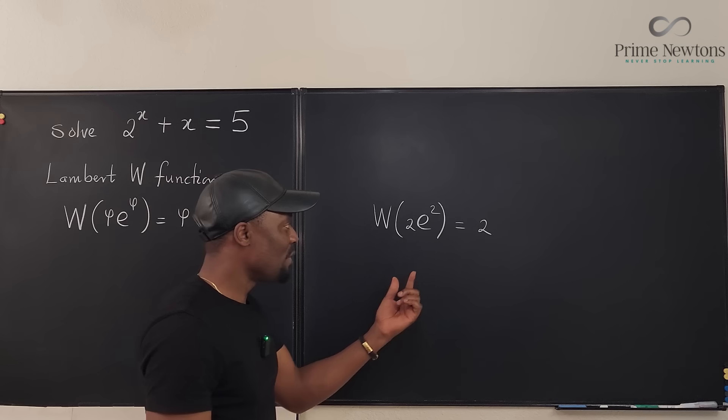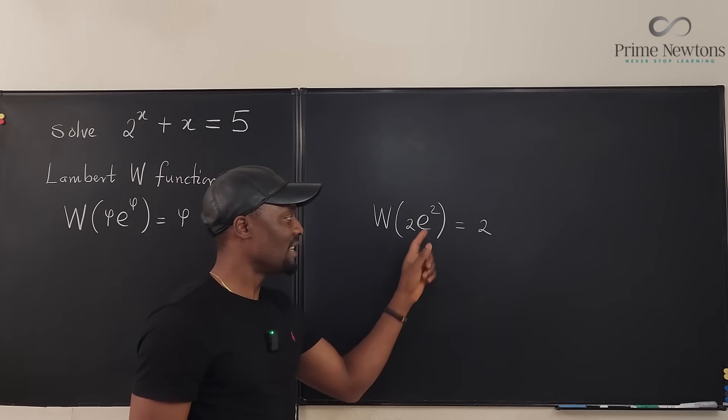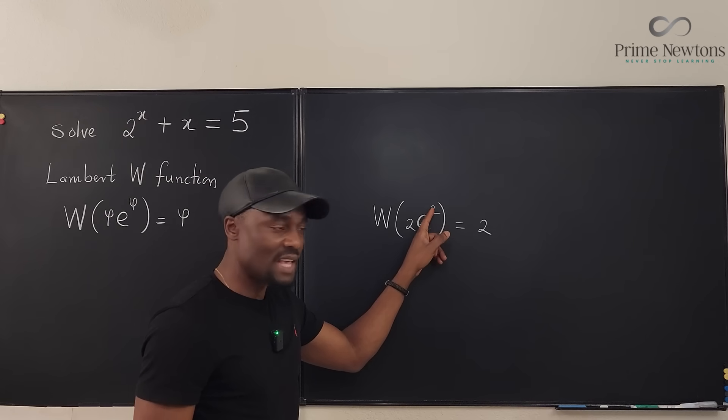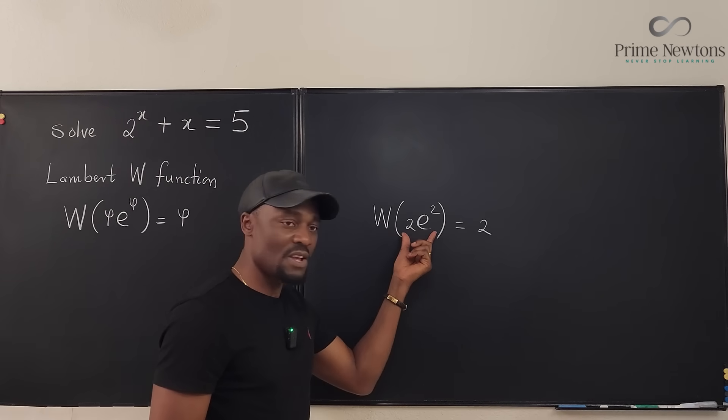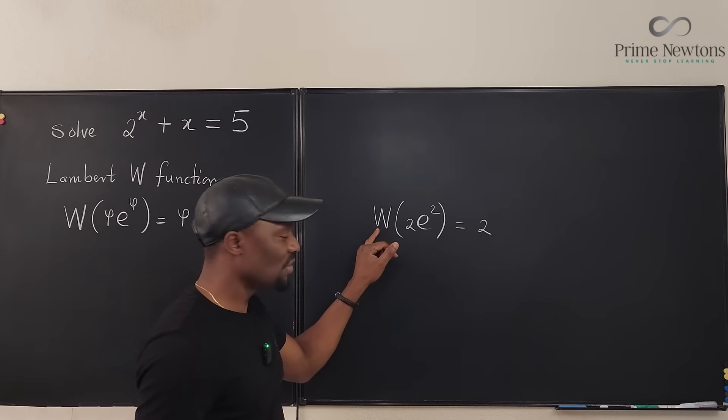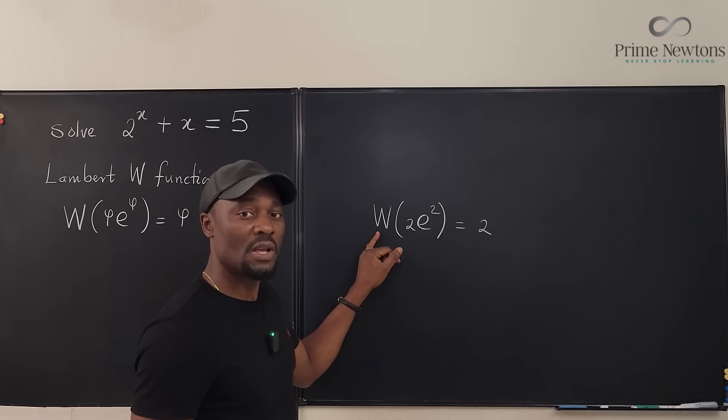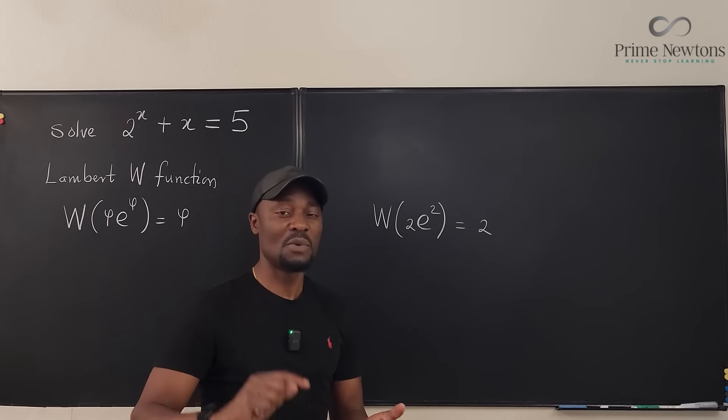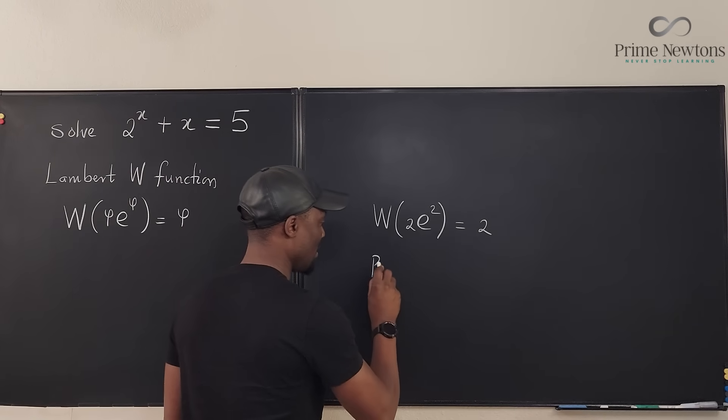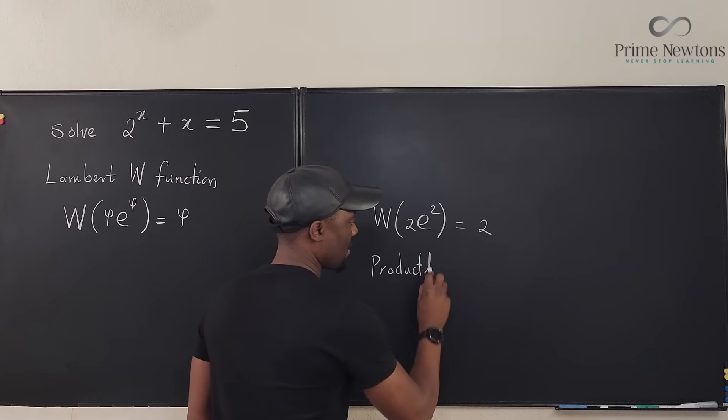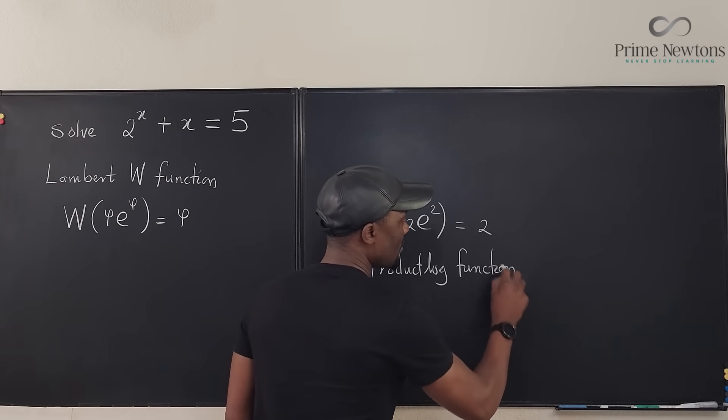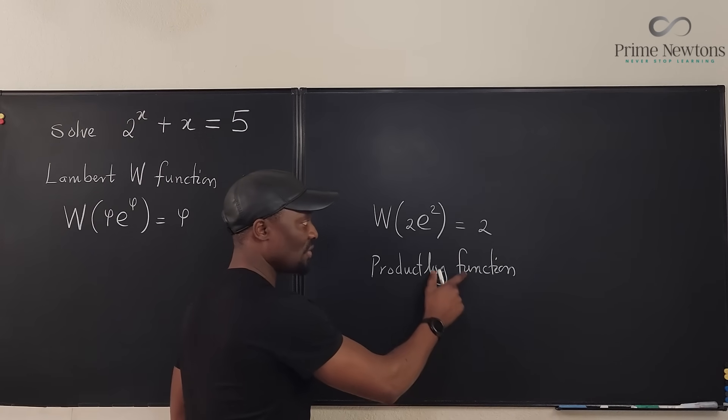Whatever you plug into it that looks like this: something times e to that same thing. If that's the argument of the Lambert W function, this is what you have. This function W is called the product log function. So if you have a computer system or a calculator that has the product log, this is the product log function.